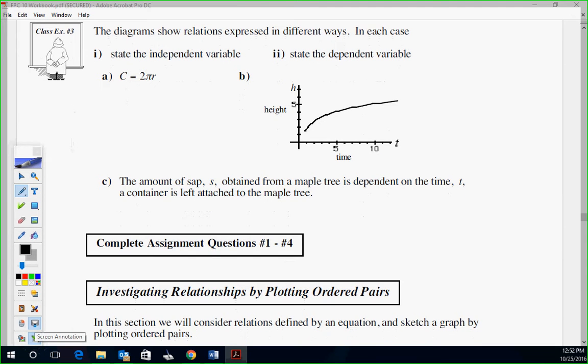On the next one. Diagram shows relations expressed in different ways. In each case, state the independent variable. On A, what's the independent variable? Spencer, what do you think? I'll tell you pi is not a variable. So, what's the independent variable? Remember, variable. You're on the right side. R. Independent variable is R. 2 is always going to be a 2, so it won't change. A variable means it's going to vary, it's going to change. What's your dependent, Raj? Good. Dependent's that big C.